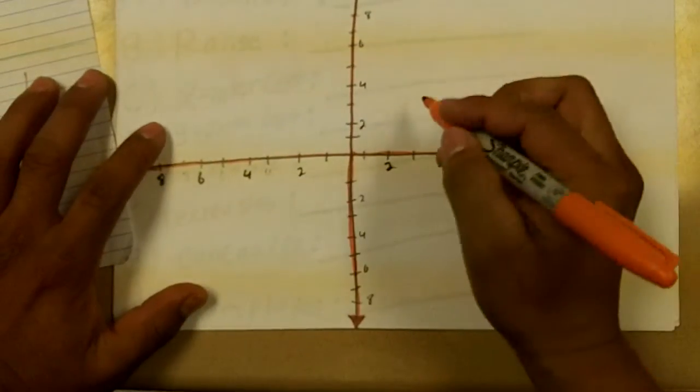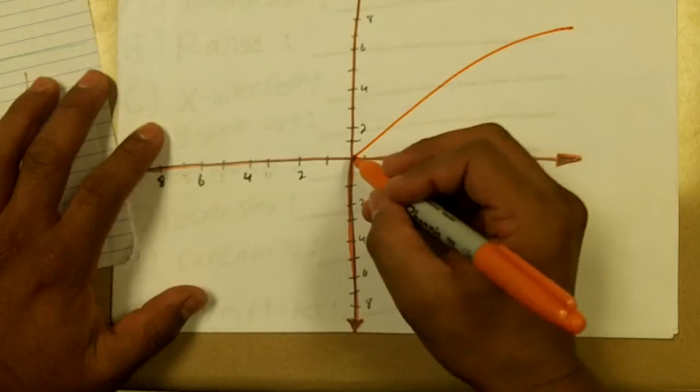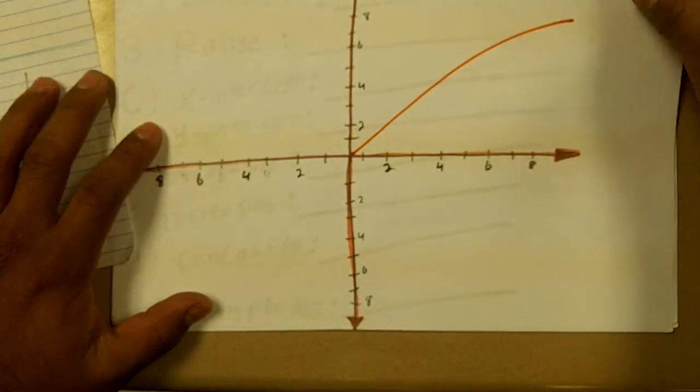And if we draw it out on the calculator it's going to look something like this. It's just starting from zero and going all the way through all the x values.